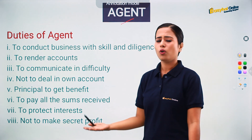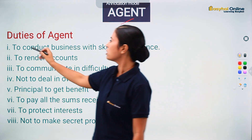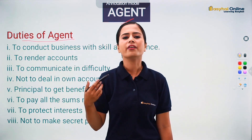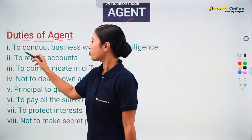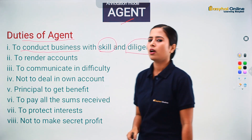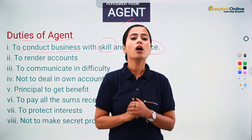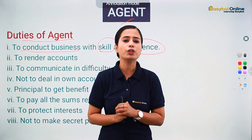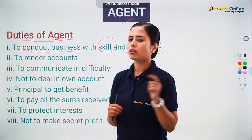As we already know what an agent is, now we are talking about the duties of an agent — kya karta hai, kya responsibilities hain, kya rights hain, kya obligations hain. So the first duty is to conduct business with skill and diligence. Agar principal ne agent ko koi kaam diya hai, toh it's the responsibility of the agent ki woh us kaam ko proper skill aur diligence ke saath, efficiently aur effectively poora kare.